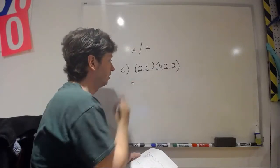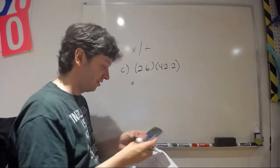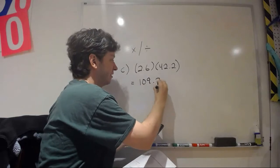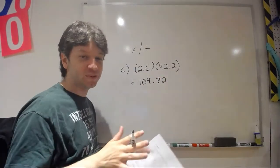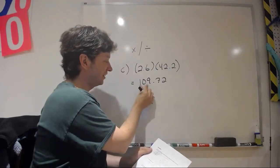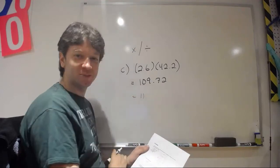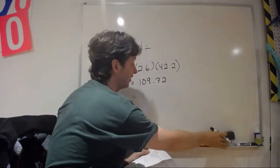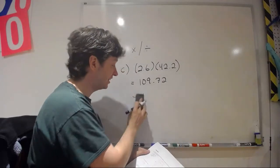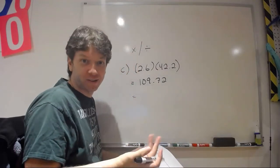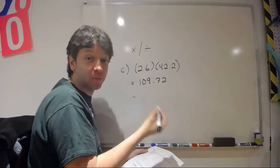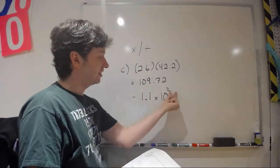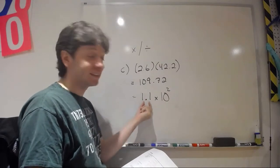Your answer should only be as good as your weakest link, so it should have two significant digits. When you punch 2.6 × 42.2 into your calculator you get 109.72, but it should only have two significant digits. Some people get confused — do you round to 11? No, that's ridiculous, 11 is nowhere near 110. Don't change the order of magnitude of your answer. Use scientific notation: write 1.1 × 10². This tells us it is about 110 and conveys the accuracy to two significant digits.